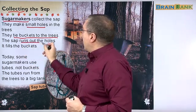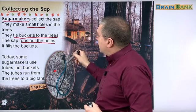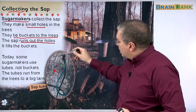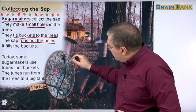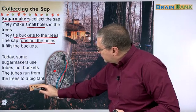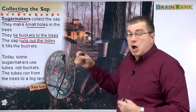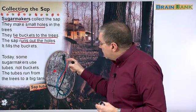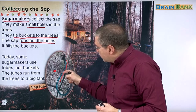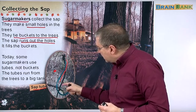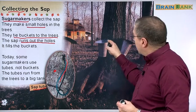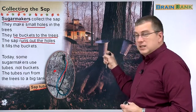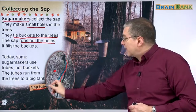The sap runs out the holes and it fills the buckets. We can see here that the hole is here and then you have this — a sap tube. There's air inside; it's empty inside. So when the sap comes out, there's some room and it can go through the tube and then into the buckets. The sap comes out of the tree, down the tube, and then it drops into the buckets. So that is a sap tube — you have to have a special tool to get the sap from the trees.